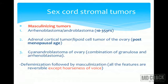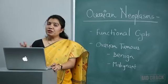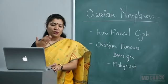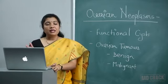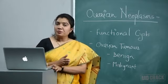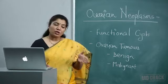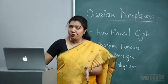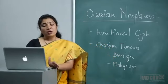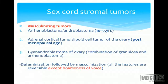Gynandroblastoma of ovary is a combination of granulosa and arrhenoblastoma; there are signs of defeminization followed by masculinization — change in body contour, flattening of breast, increased hair growth, and hoarseness of voice. When the tumor is removed, most changes are reversible: body contour returns to feminine, breast growth resumes. However, hoarseness of voice is the non-reversible feature — even after treatment it does not change.